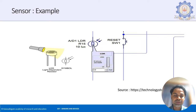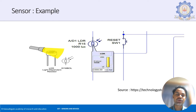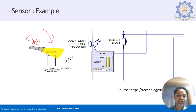When luminescence is 10, the resistance is very high. When luminescence is 1000, the resistance is very low. So it is sensing the amount of light falling, and it has applications such as a simple street light as a basic example.